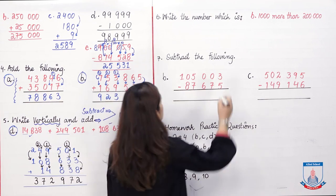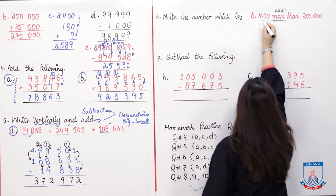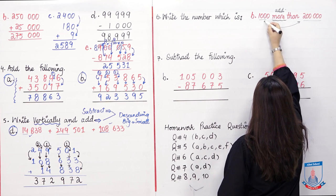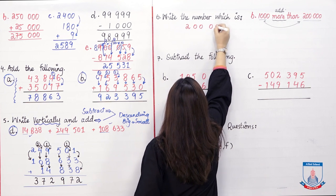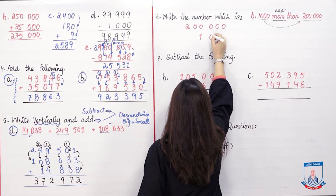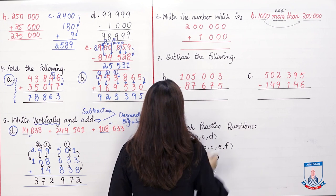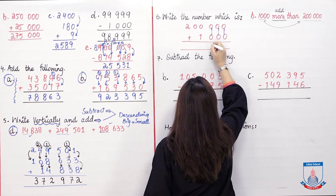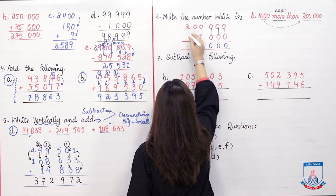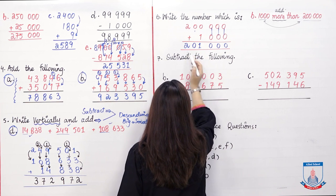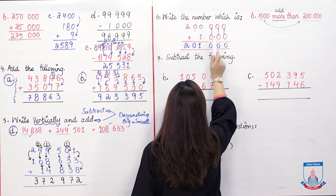Question 6: When 'more' is mentioned, we will add. We add 1,000 to 200,000. Writing vertically: zeros plus zeros, then 0 plus 1 is 1, 0 plus 0 is 0, and 2 stays the same. If we add 1,000 to 200,000, the answer is 201,000. Parts A, C, and D are your homework.